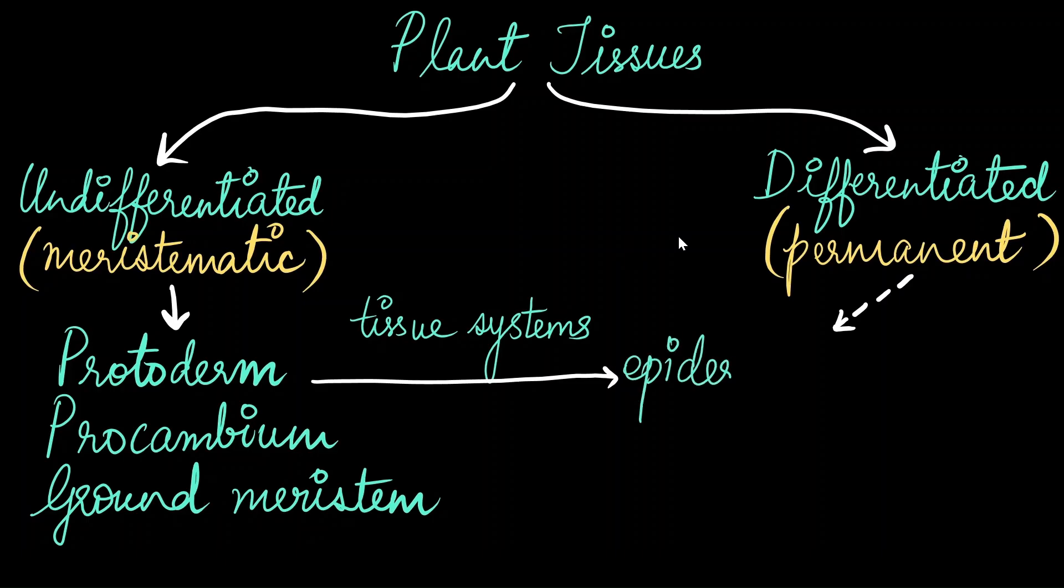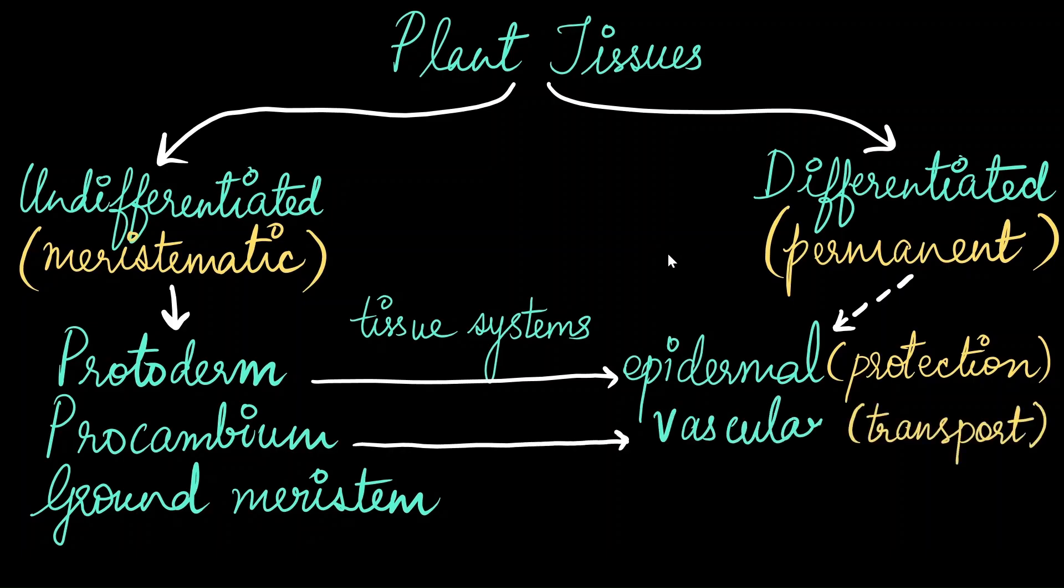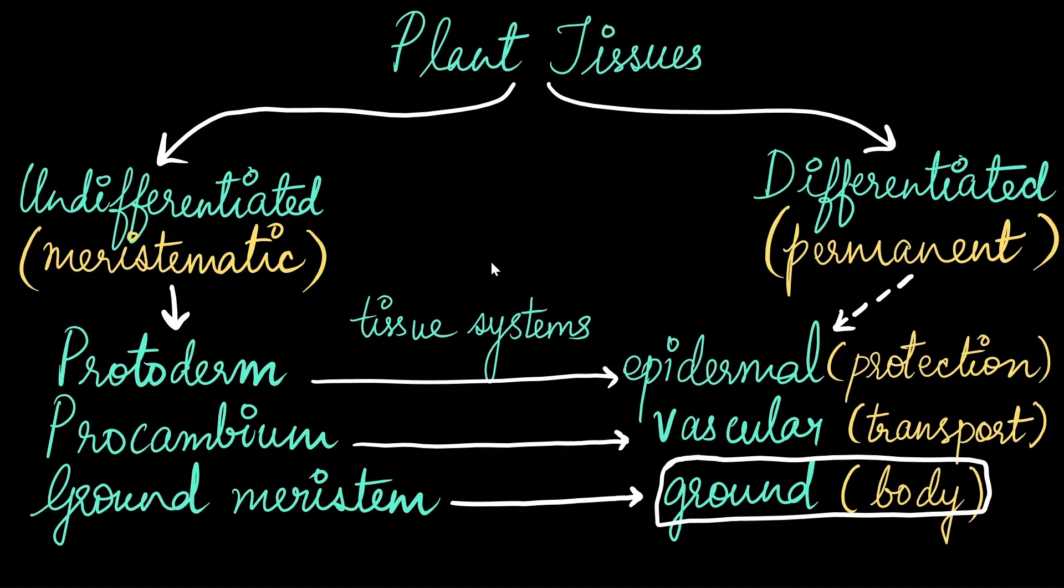Protoderm gives rise to epidermal tissue system, which is mainly for protection. Procambium gives rise to vascular tissue systems, which is for transport. And ground meristems give rise to ground tissue, which forms the body of the plant. In this video, we will be focusing on the ground tissue systems.